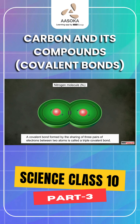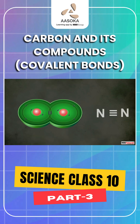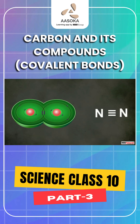Such a covalent bond that is formed by the sharing of 3 pairs of electrons between 2 atoms is called a triple covalent bond. A triple covalent bond is represented by a triple dash between the symbols of 2 atoms.